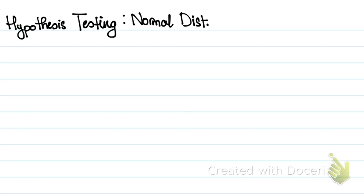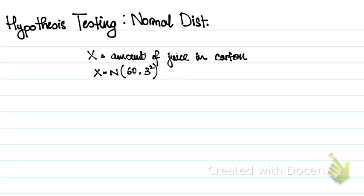Alright, so how to carry out a hypothesis test when x follows a normal distribution. We'll do an example. Let's say x is the amount of juice in a carton, and the company that produces these juice cartons says that x follows a normal with mean 60 milliliters and variance 3 squared. This is a random example.